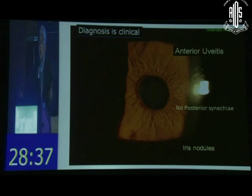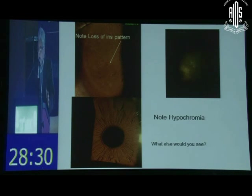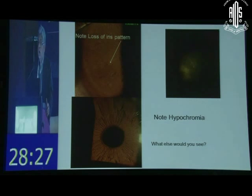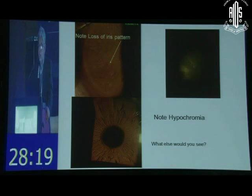What kind of uveitis produces no synechiae? Fuchs uveitis — absolutely fantastic. So though it is called heterochromic uveitis, in brown irides it is very very difficult to distinguish or to see the hypochromia in these patients. What else would you see?